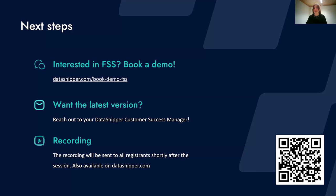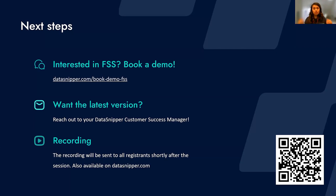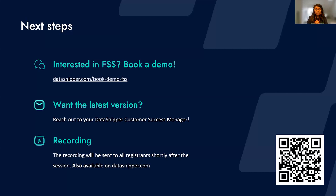A question: with version six version comparison, will custom tick marks also be transferred from the previous version to the current version? Yes — they will be transferred as long as there is no change in the value. Another question: can you compare a current year financial statement in Excel and a prior year in PDF? Yes — when you import an Excel file, it is converted to PDF in the background within the FSS module, so you can compare across file formats.